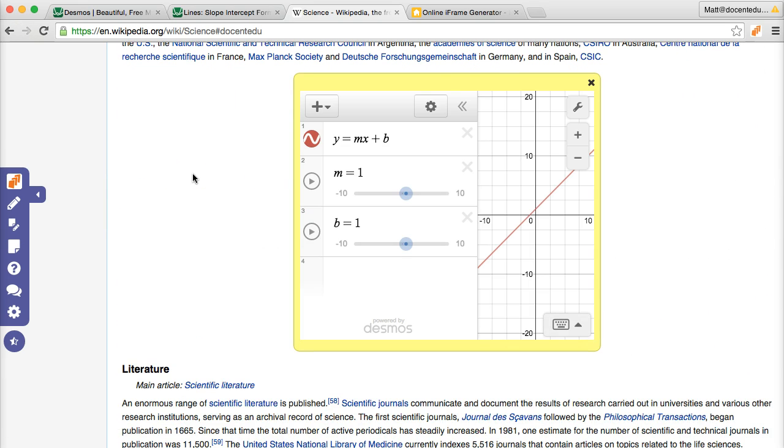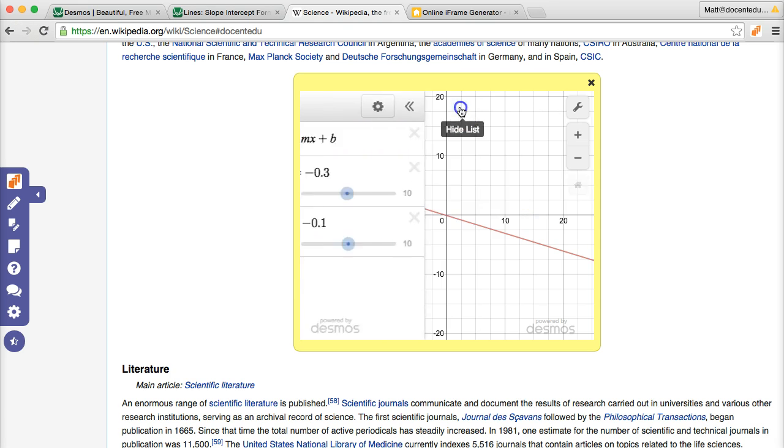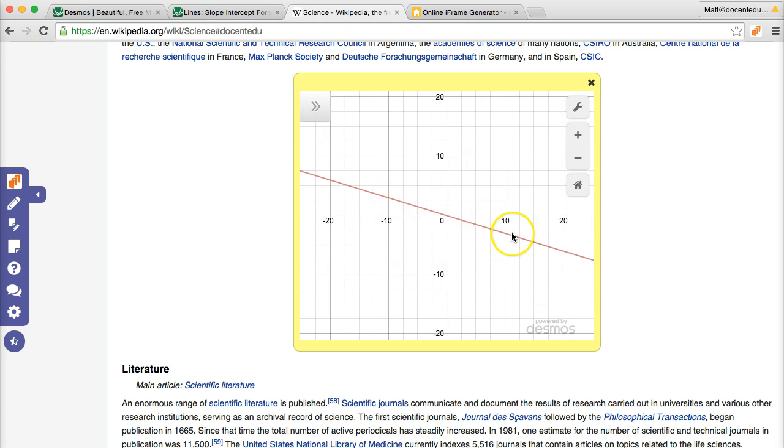Now the window is smaller, but it does allow students to modify and manipulate the graph based on what we have right there. They can put in their own equations and move the mouse around to figure out spots like the X and Y intercepts.